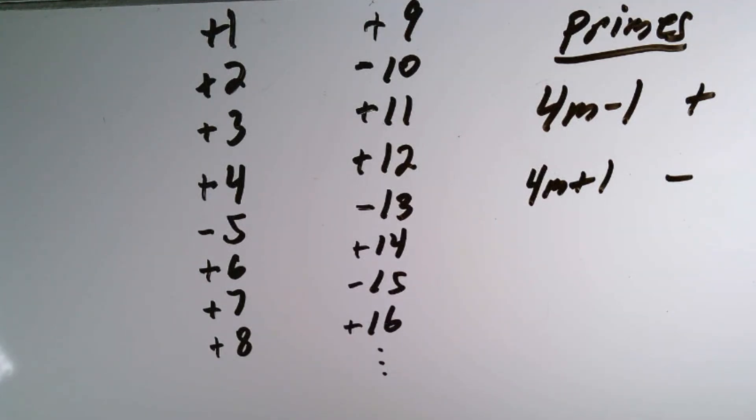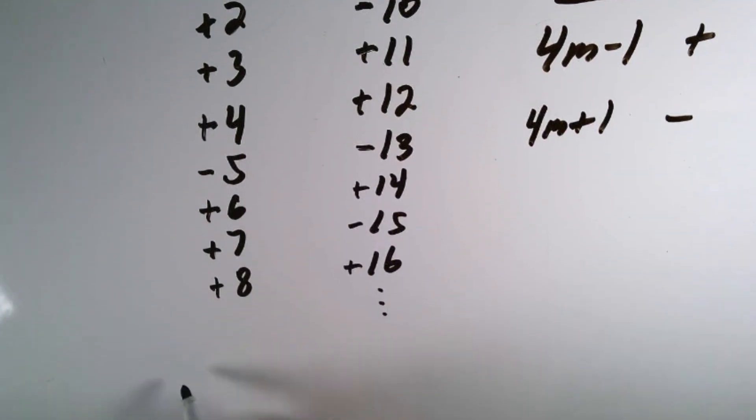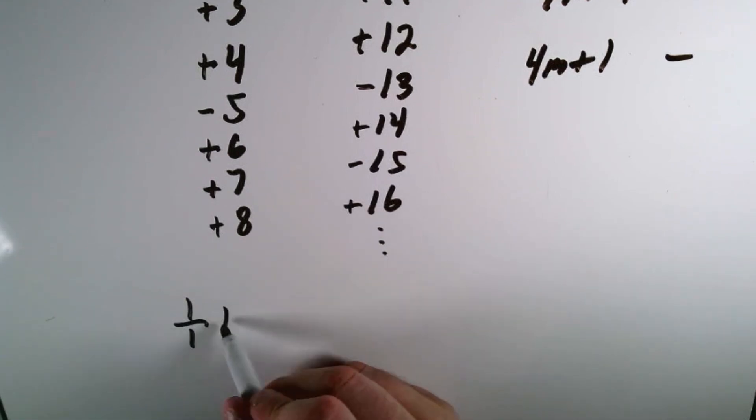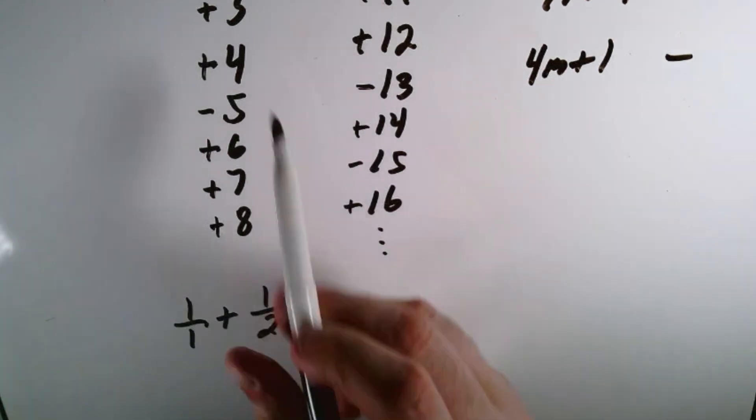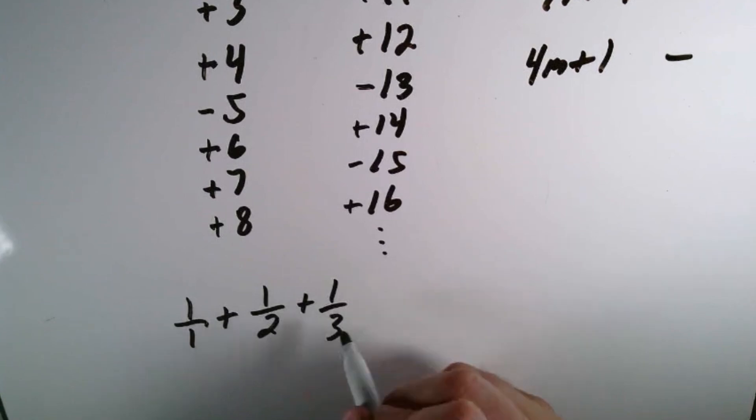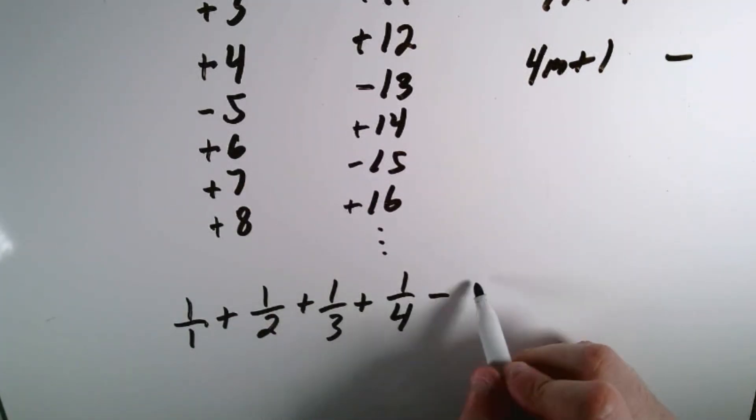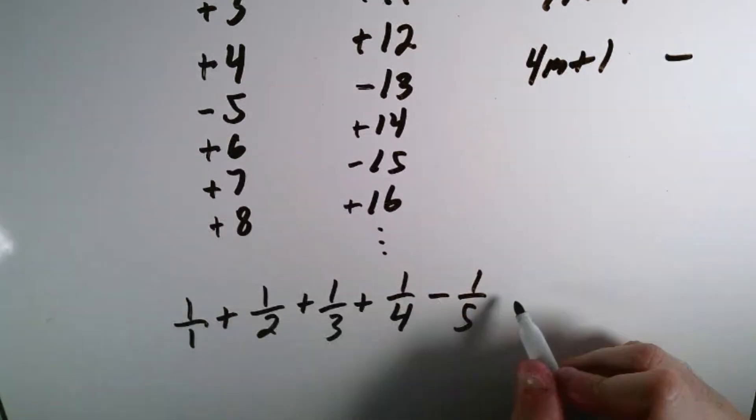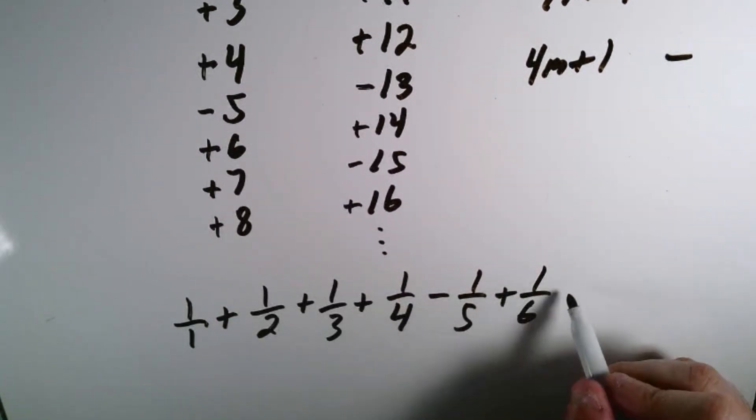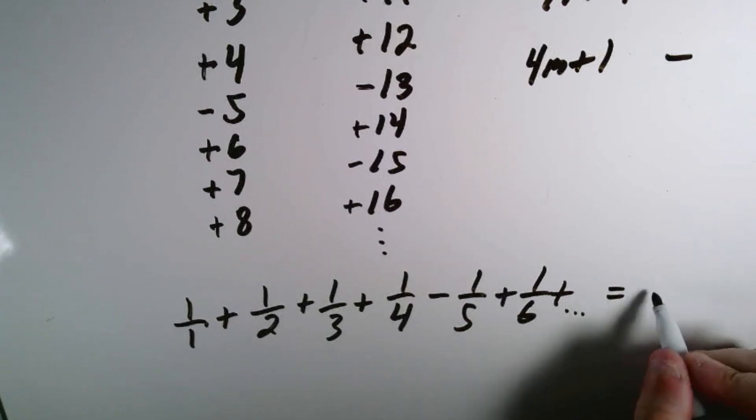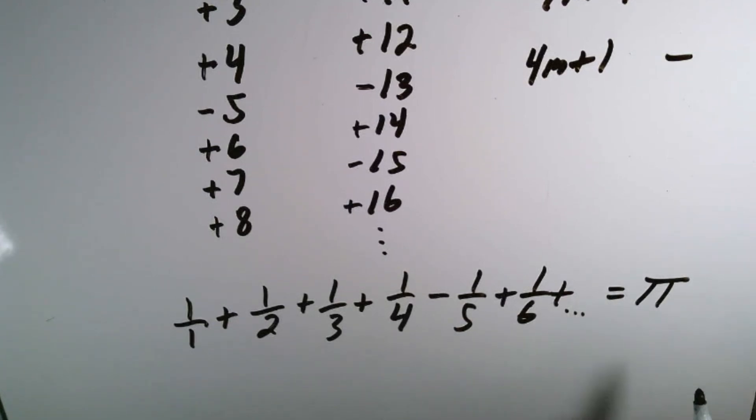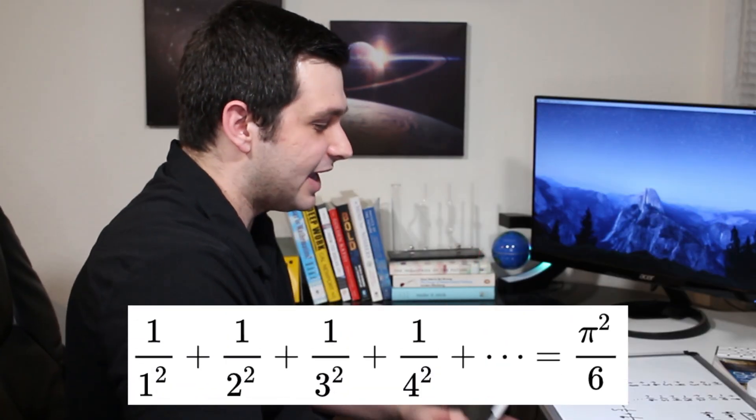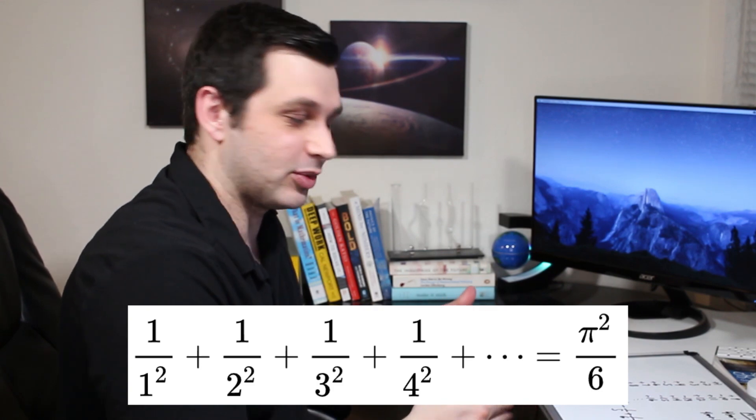Then for the series, we really just add the reciprocals of these values. So we do 1 over 1, which is positive, plus 1 over 2, because 2 is positive, plus 1 over 3, because again 3 is positive, plus 1 over 4. Then we do minus 1 over 5, because 5 was negative, and we just keep going. If we did this forever, this series would equal pi, which is very weird.